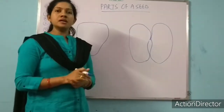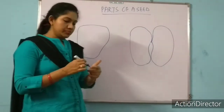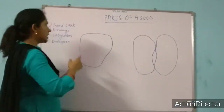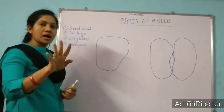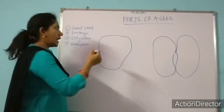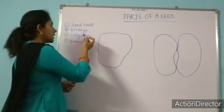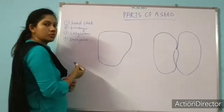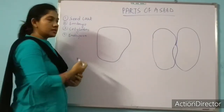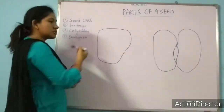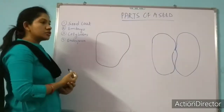Let's start the parts of the seed one by one. I have written four parts of the seed: first, seed coat; then embryo; cotyledons; and endosperm. There are four parts of the seed — we will discuss each one by one.